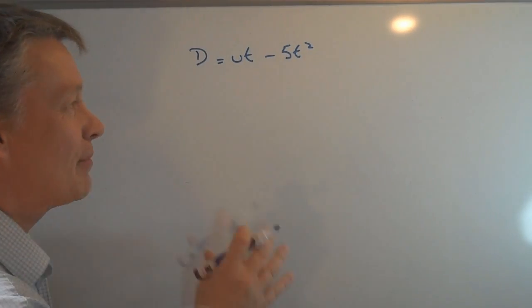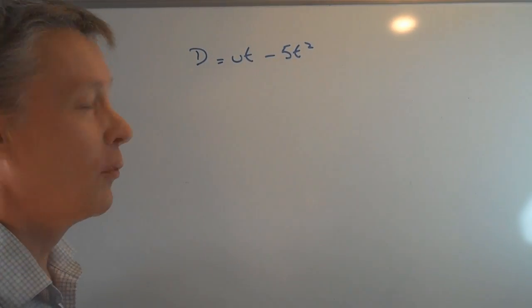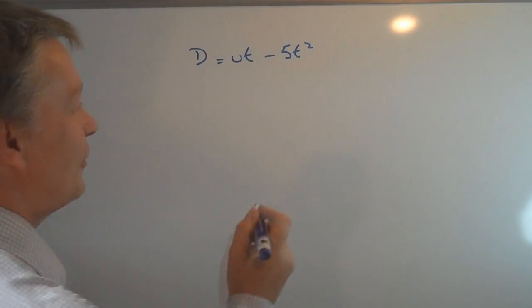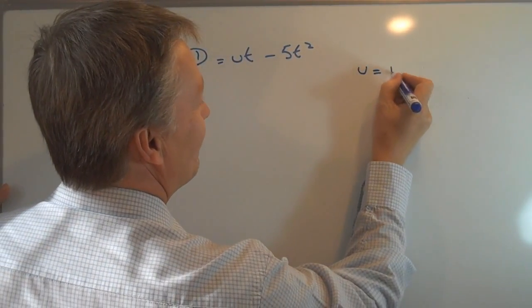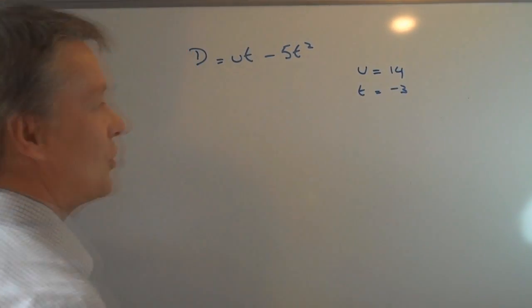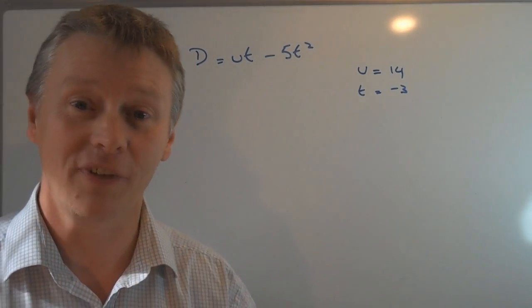However, for the purposes of this particular video you're going to be given two values, one for u and one for t. The value for u is 14 and the value for t is minus 3. And what they want you to do is to calculate the value of d.